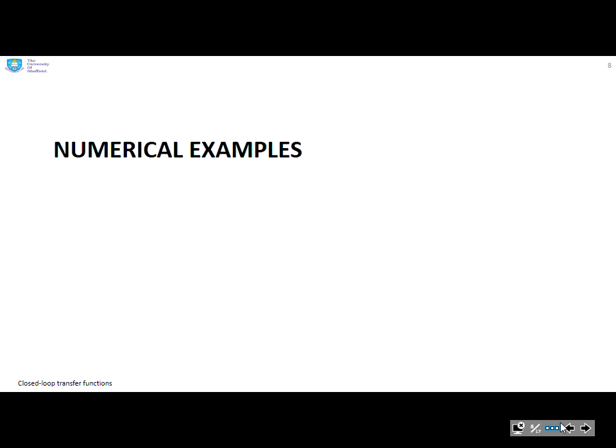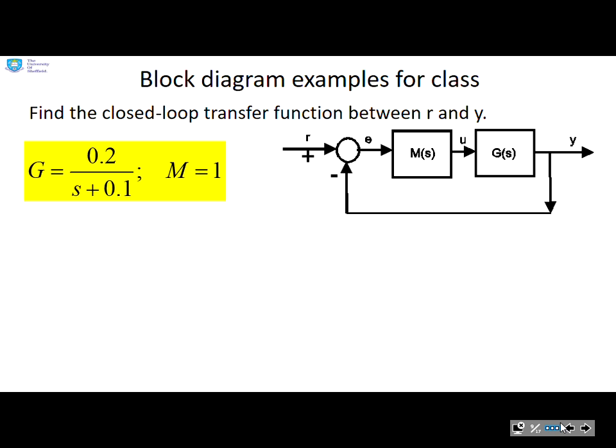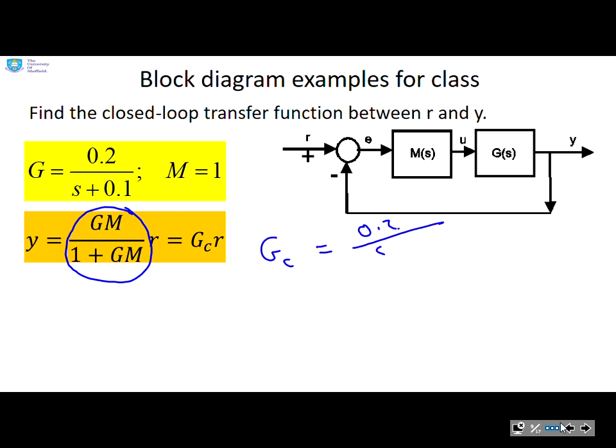Some numerical examples there. Find the closed loop transfer function between r and y for the given g and m. And this is just a reminder of the expression we're using. So the closed loop transfer function is gm over 1 plus gm. So what I'm going to write is gc equals 0.2 divided by s plus 0.1, all divided by 1 plus 0.2 over s plus 0.1. It looks a little bit messy.